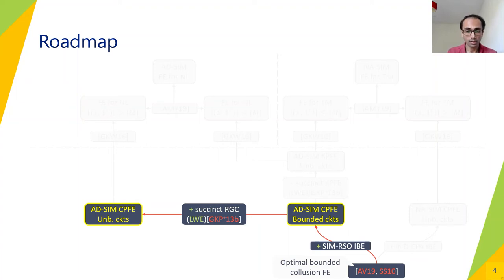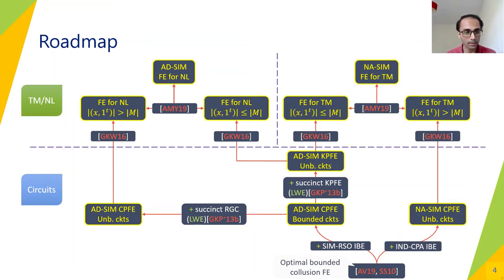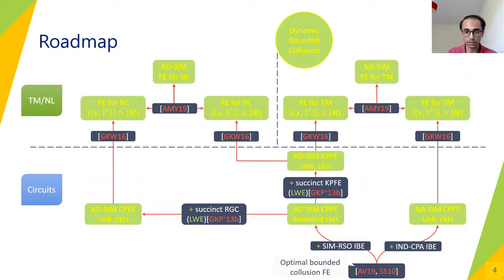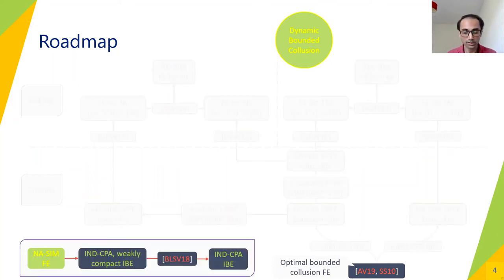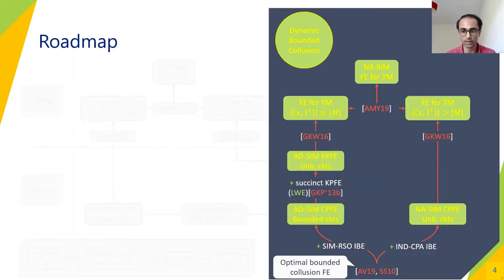Mirroring the same techniques, we can build adaptive simulation secure FE for non-deterministic log-space machines. The upper part of the slide represents the Turing machine and NL constructions and the lower part represents the FE for circuits constructions. All constructions built are dynamic bounded collusion secure. Further, we show that non-adaptive simulation secure FE satisfying dynamic bounded collusion for a small class of functions already implies IND-CPA secure weakly compact IBE, which via recent work by Brakerski et al. yields an IND-CPA secure IBE scheme. For the rest of the talk, Narasimha will present the details.